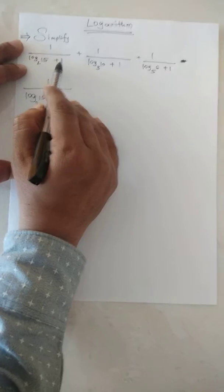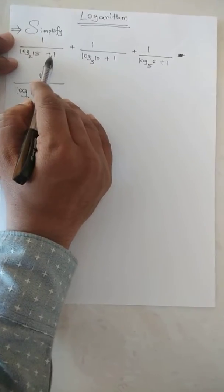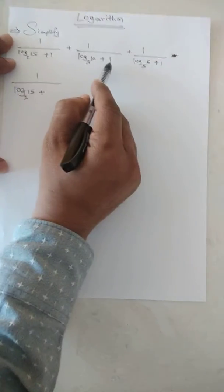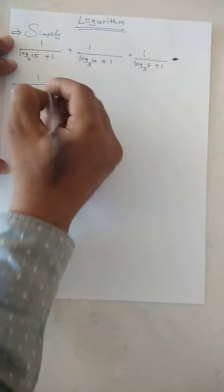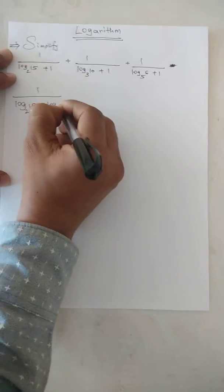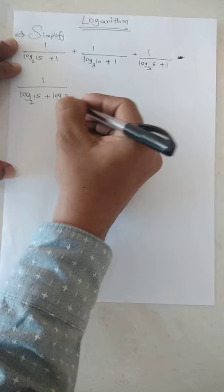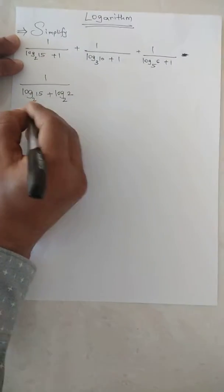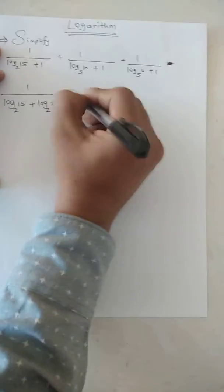to write this plus 1 in such a way that we'll get the base as 2, base as 3, and base as 5. So log base 2 of 2 is equal to 1 and the base will remain the same, plus 1 over